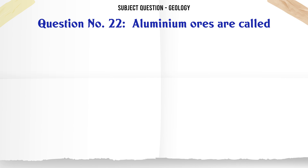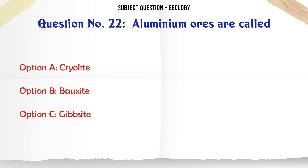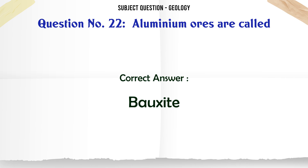Aluminium ores are called: A. Cryolite. B. Bauxite. C. Gibbsite. D. All. The correct answer is Bauxite.